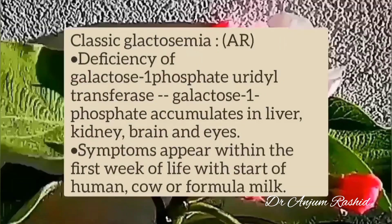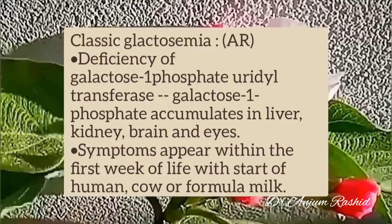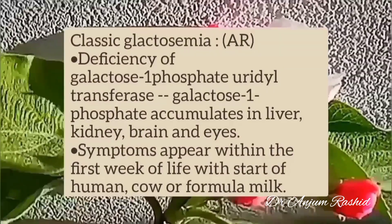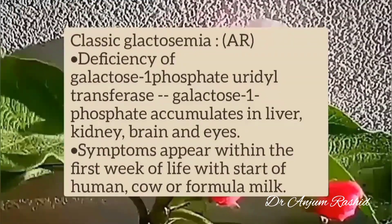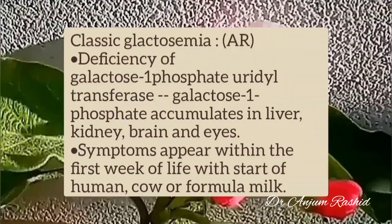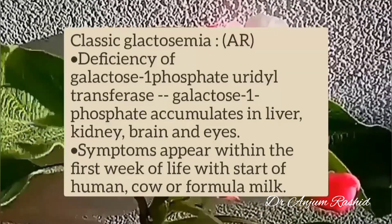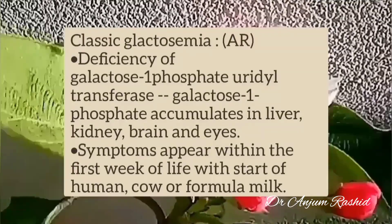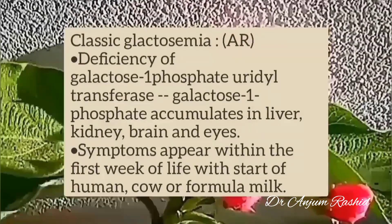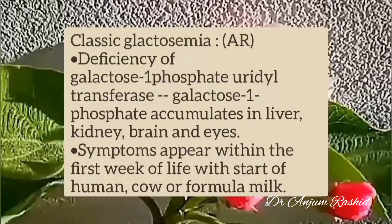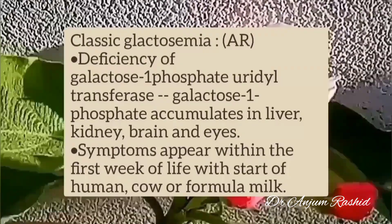Classic Galactosemia is an autosomal recessive disease. It is due to deficiency of galactose-1-phosphate uridyl transferase, and results in accumulation of galactose-1-phosphate in the liver, kidney, brain, and eyes.